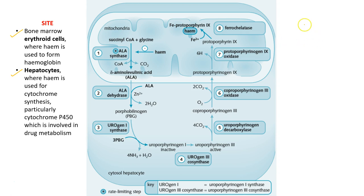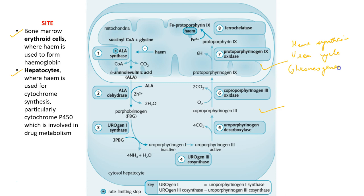In the cells, heme synthesis occurs in both mitochondria as well as in the cytosol. There are only three processes in the body which occur in both mitochondria and cytosol. To remember them, we use 'both arms to hug': heme synthesis, the urea cycle, and gluconeogenesis are the three processes which occur in both mitochondria and cytosol.